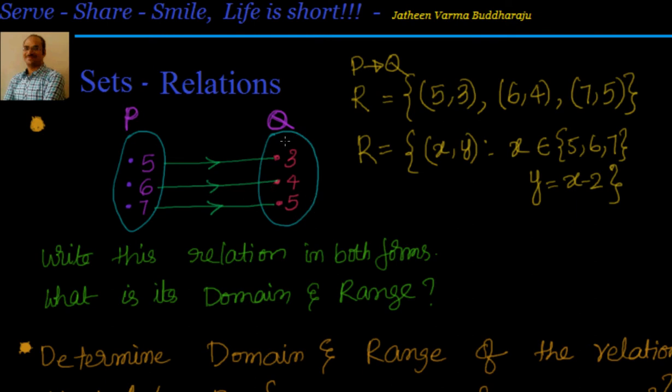Actually, we have only 3 elements. If I have some other elements, they will not be part of this relationship. That's about it. Now what is its domain? Domain always comes from the first set, and what is domain? All the elements which are part of the relation.